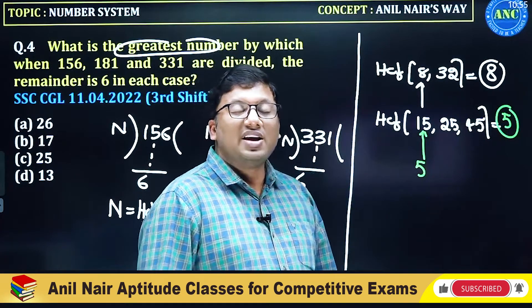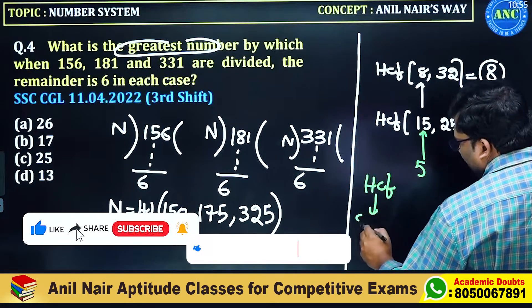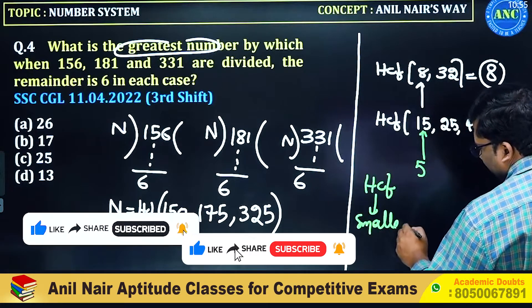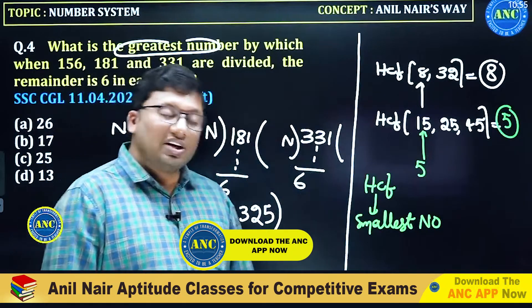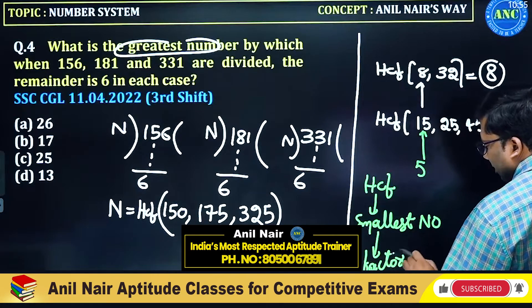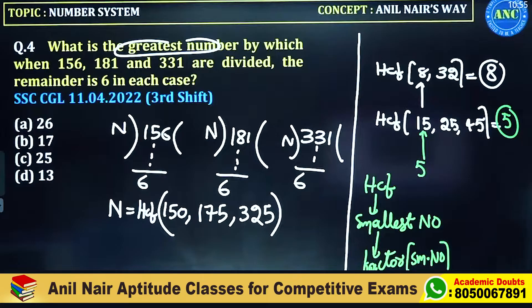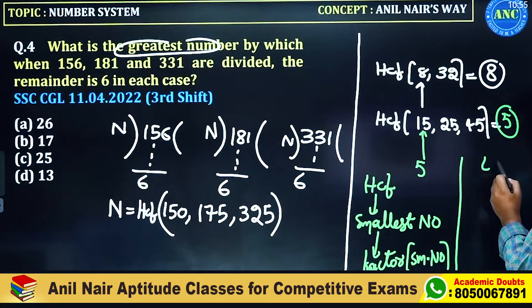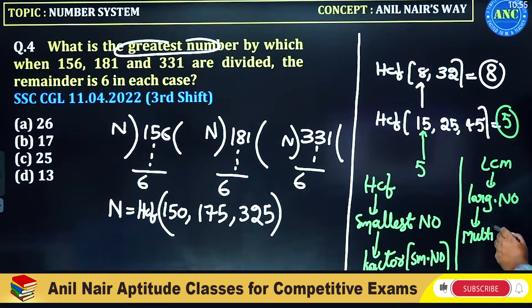Whenever you are doing HCF, first check with the smallest number. If the smallest number is dividing every other number, then the smallest number is the answer. If it is not dividing, take the factor of the smallest number. If it is LCM, concentrate on the largest number. If the largest number is not a multiple, take the multiple of the largest number.